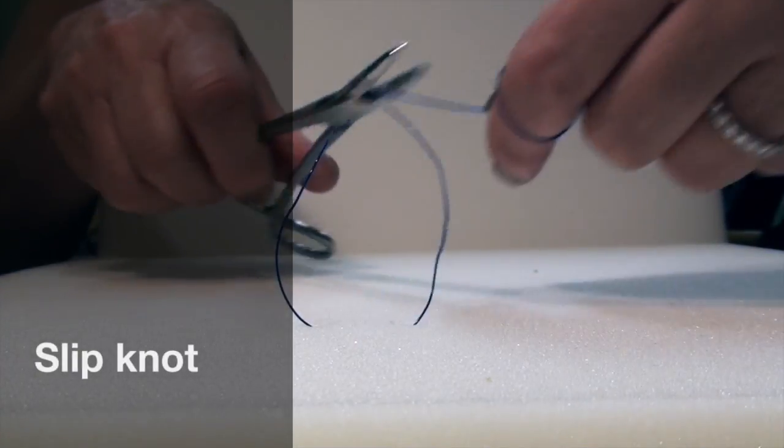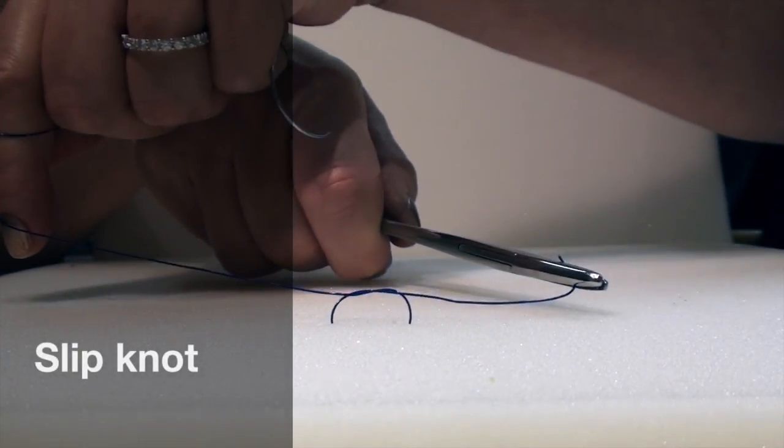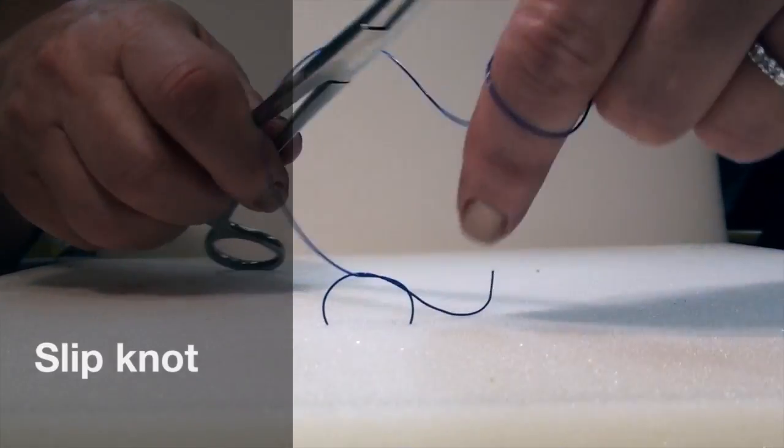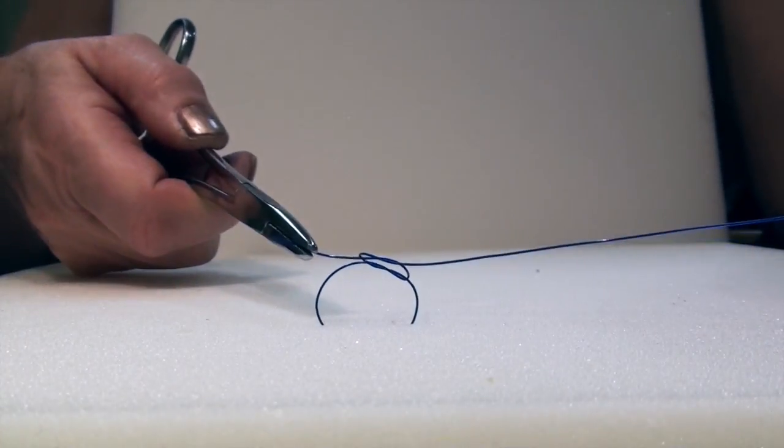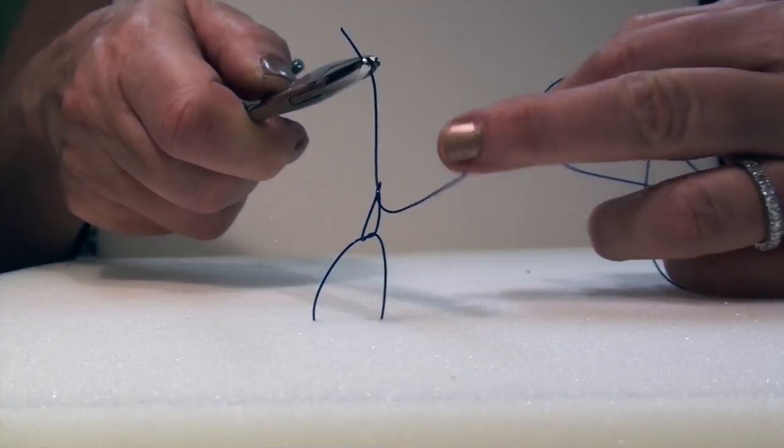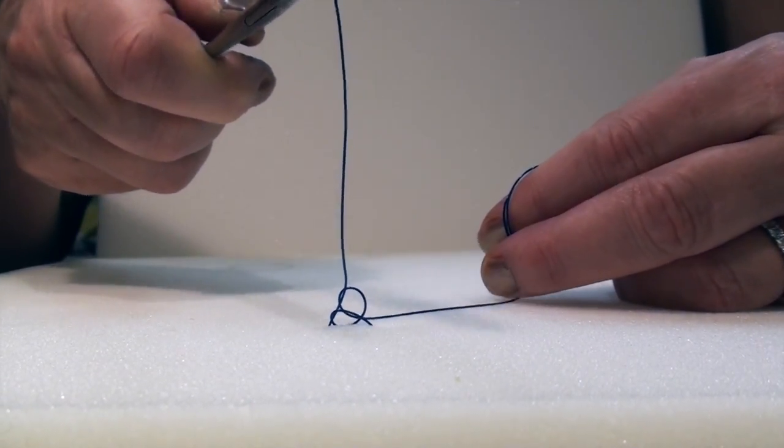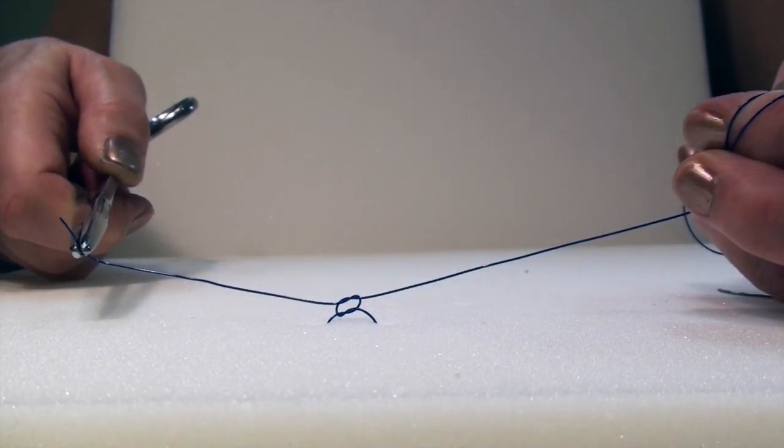A slip knot is a very useful type of knot to use, especially when there's a bit of tension on the tissues. It can be created using any type of suture materials, but the monofilaments do make a knot slip a little easier than the braided materials.